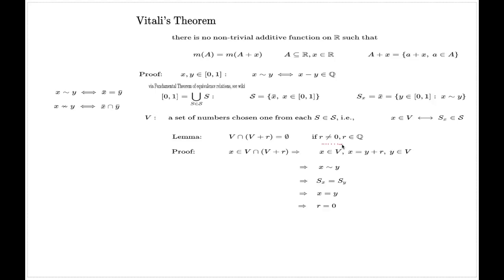That's a contradiction with the assumption that r was non-zero. So we see that translating the Vitali set by a non-trivial rational shift yields a set completely disjoint from the original Vitali set.